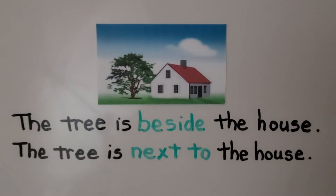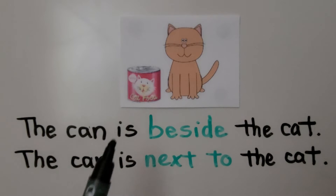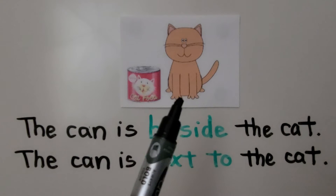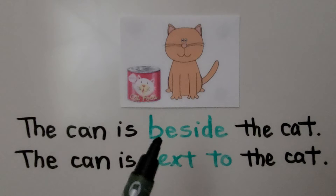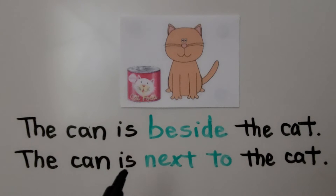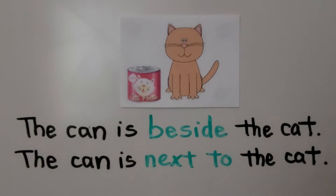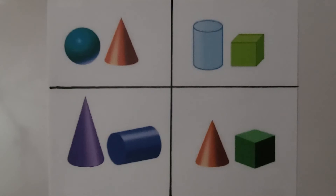Here is a picture of a can of cat food and a cat. The can is beside the cat. The can is next to the cat. The can is by the side of the cat. Beside and next to mean the same thing — they mean by the side of.